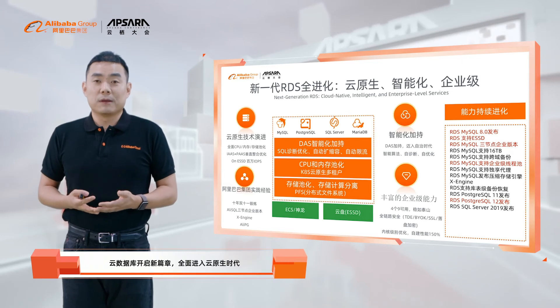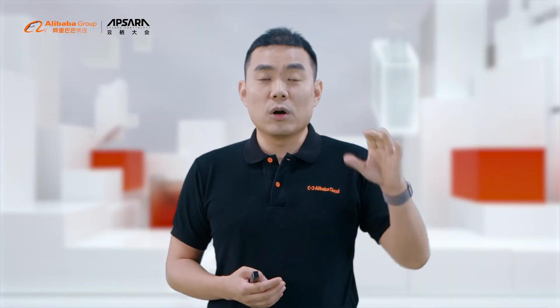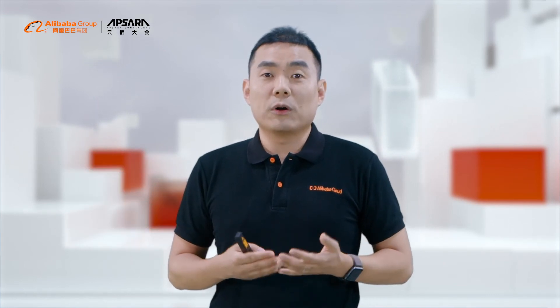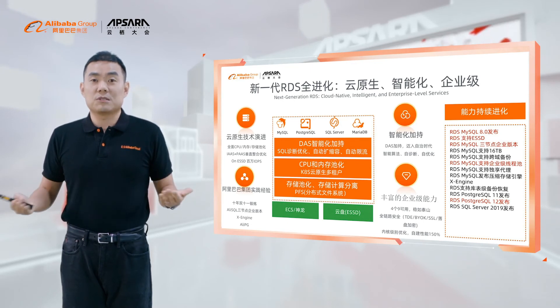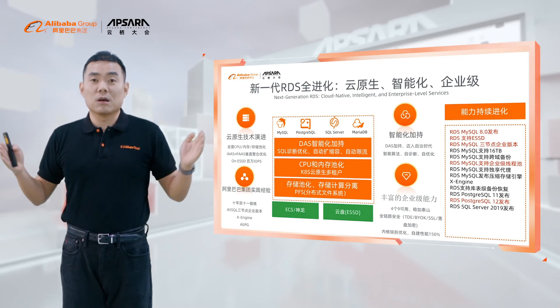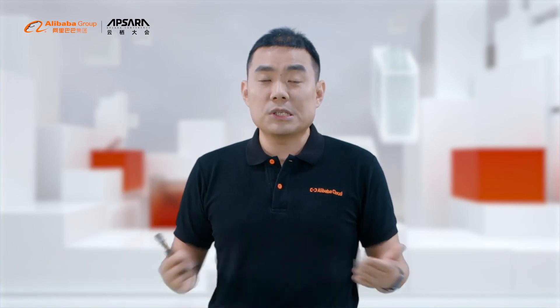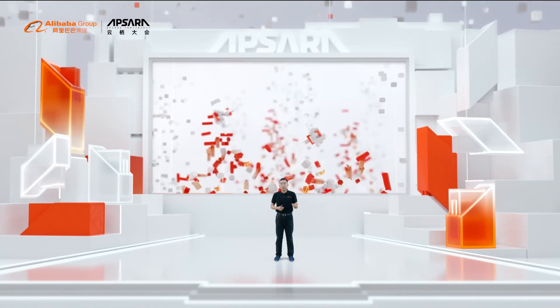Lastly, I want to talk about our RDS standard version. RDS will continue to evolve and improve its cloud-native and enterprise-level database capabilities. Our next-generation RDS will fully embrace cloud disk and ECS, meaning everything will be on the cloud including storage. We will use storage and computing separation technology to support flexible capacity expansion, high concurrency, and low-cost storage. Our RDS products also support many standard enterprise-level security features such as audit. We have also launched DAS, our intelligent smart control product on the RDS platform.